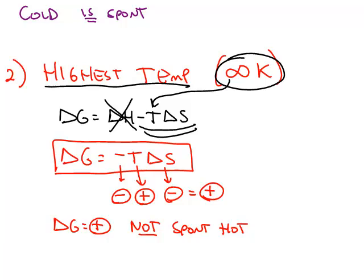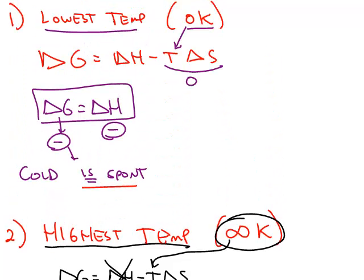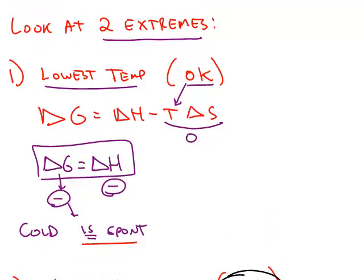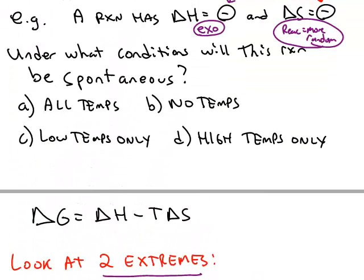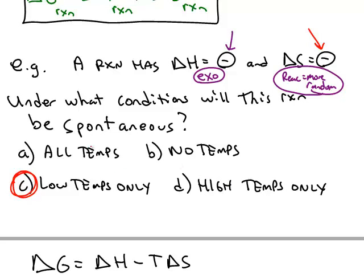So when it's hot, the reaction is not spontaneous; when it's cold, it is spontaneous. This particular example is spontaneous only at low temperatures. Notice there are four possible cases, because delta H could either be positive or negative, and delta S could either be positive or negative.